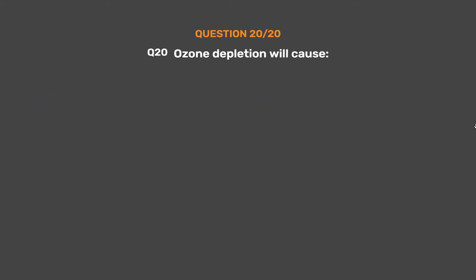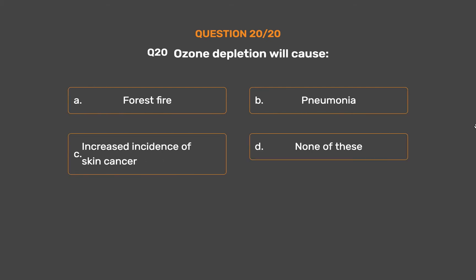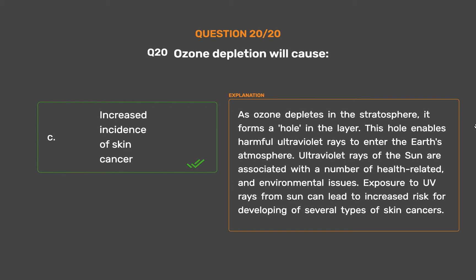Question number twenty: ozone depletion will cause — Option A: forest fire. Option B: pneumonia. Option C: increased incidence of skin cancer. Option D: none of these. The correct answer is option C, increased incidence of skin cancer. As ozone depletes in the stratosphere, it forms a hole in the layer. This hole enables harmful ultraviolet rays to enter the Earth's atmosphere. Ultraviolet rays of the sun are associated with a number of health-related and environmental issues, and exposure to UV rays can lead to increased risk for developing several types of skin cancers.